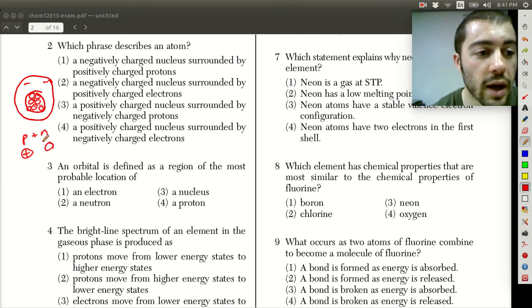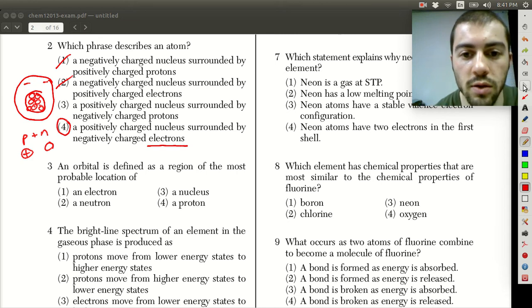It's impossible to have a negatively charged nucleus or even a zero charged nucleus, it has to be positive because it has to contain at least one proton. So the nucleus is going to be positively charged, we can take out one and two and then surrounded by negatively charged electrons here. So again we said in the middle protons and neutrons, on the outside electrons, so that would agree with answer choice four here.